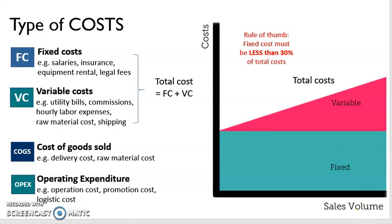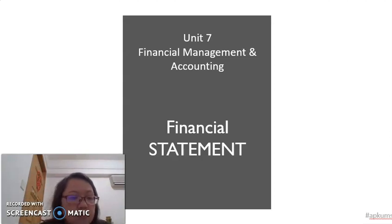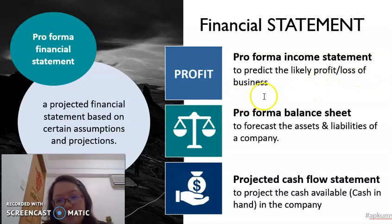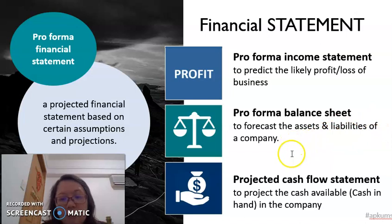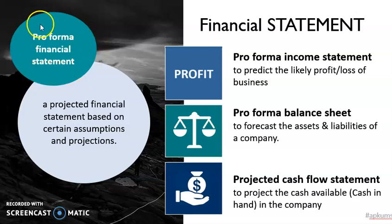Next we will look at the financial statements of a company. We prepare three financial statements. First is the income statement, which is prepared to predict the likely profit or loss of a business. The balance sheet is prepared to forecast the assets and liabilities of a company. The projected cash flow statement is to project the cash available in the company. For a new business without a sales record, they have to prepare a proforma financial statement.